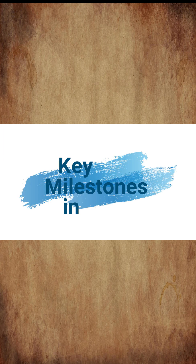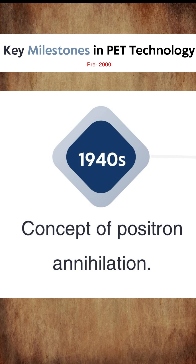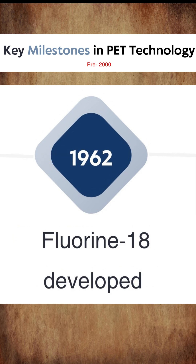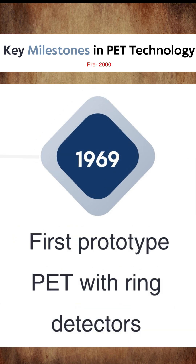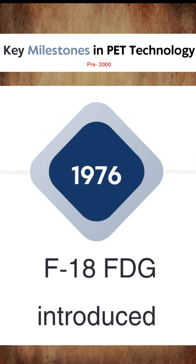Key milestones in PET technology pre-2000: In the 1940s, the concept of positron annihilation was introduced. From 1951 to 1961, the first PET prototype with coincidence detection was developed. In 1962, fluorine-18 was developed, and in 1969 the first prototype PET with ring detectors was developed.